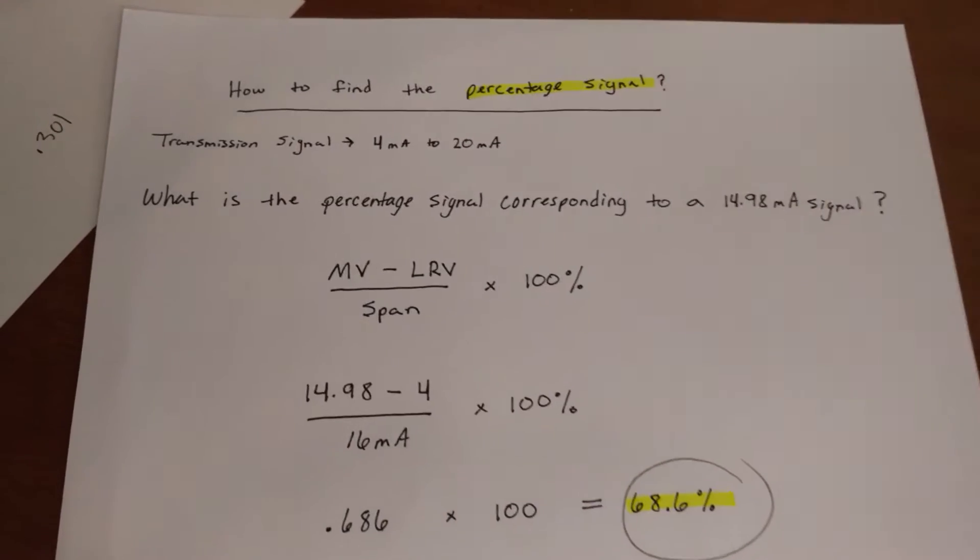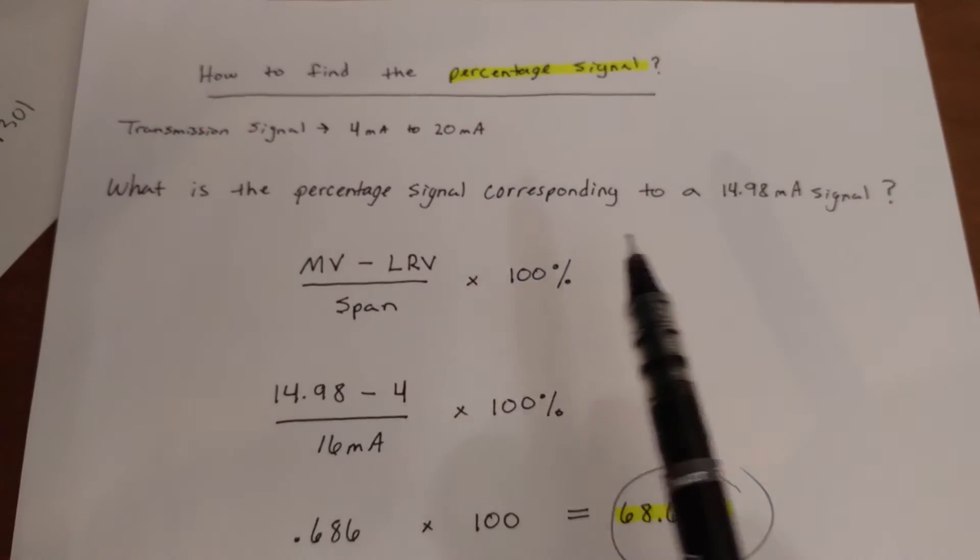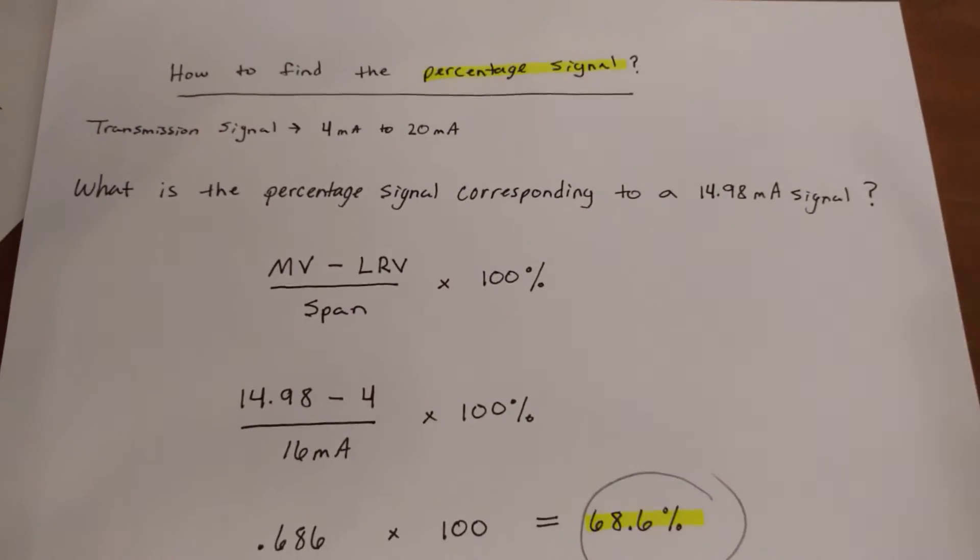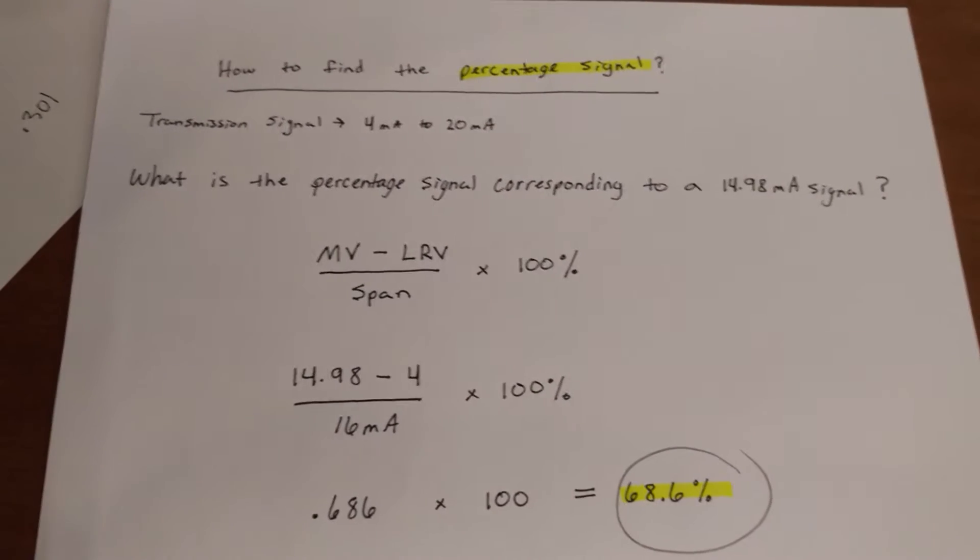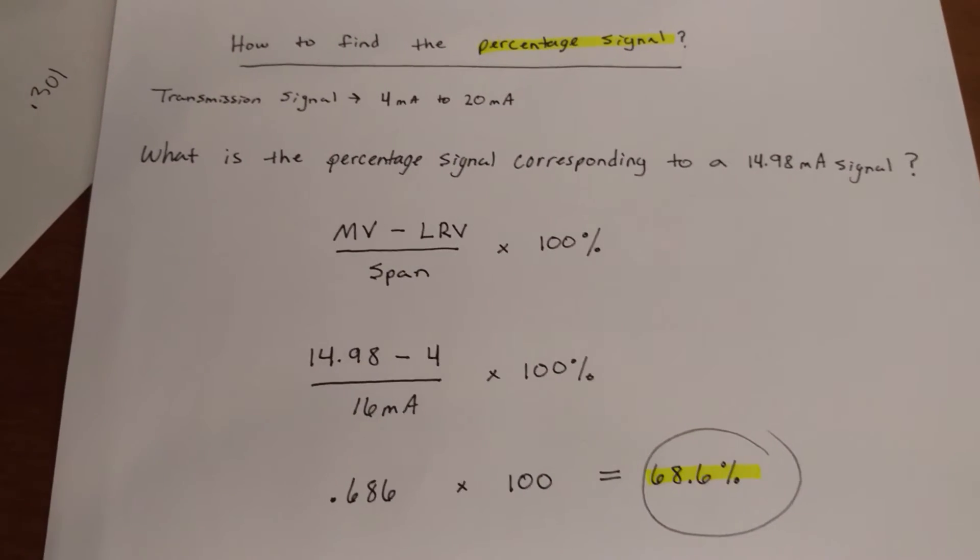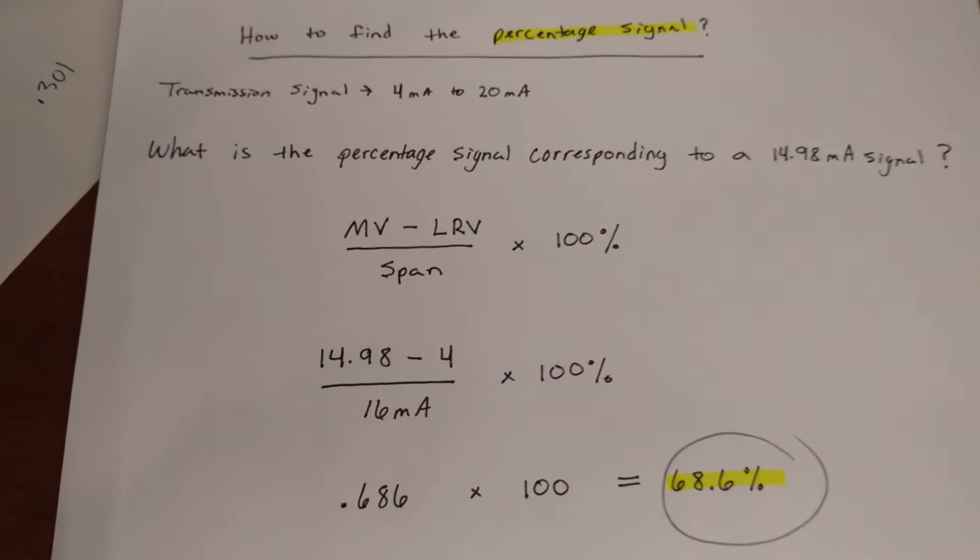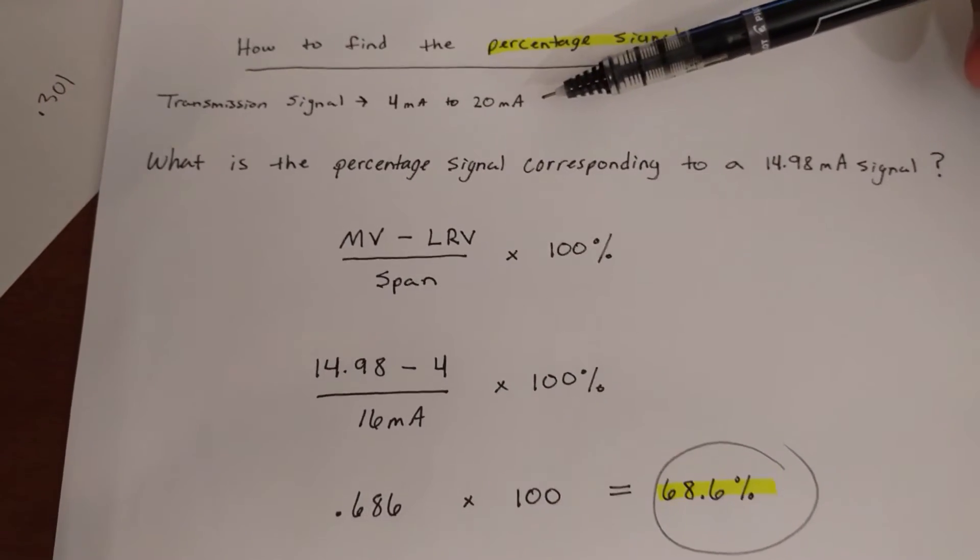Alright, so let's say you get a problem. It's something like, what is the percentage signal corresponding to 14.98 milliamp signal? Well, first of all, you have to know what your transmission signal is, and in this case it's 4 to 20 milliamps.